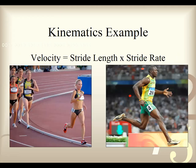Velocity — you can look at stride length times stride rate. Usain Bolt is moving at a much faster velocity than the distance runners. He has much longer stride length and stride rate.